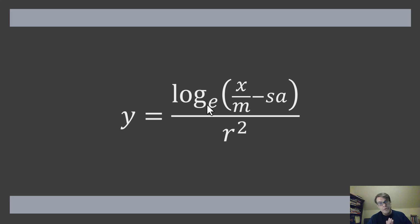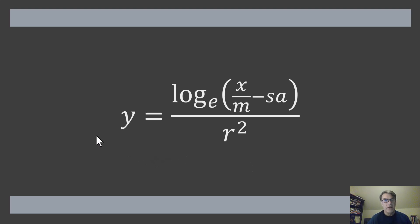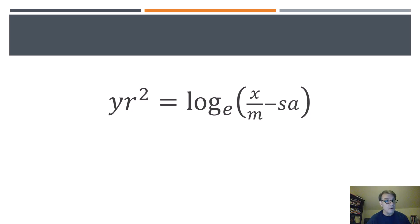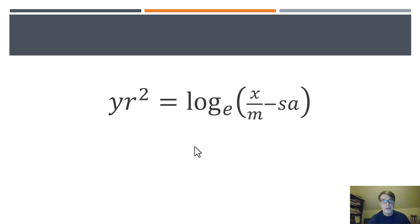The first thing we're going to do is get rid of this r squared in the denominator of the right side by multiplying both sides by r squared. When we do this, very predictably — very easy math here — y r squared equals the log base e of x over m minus s a, and you see that the denominator has disappeared; we've canceled it out.